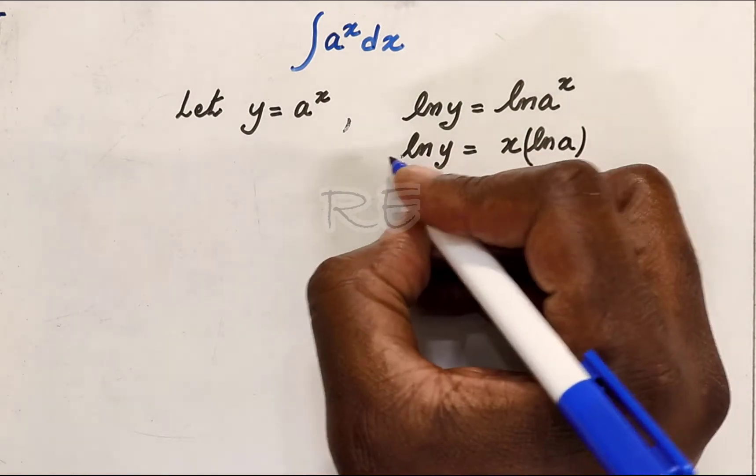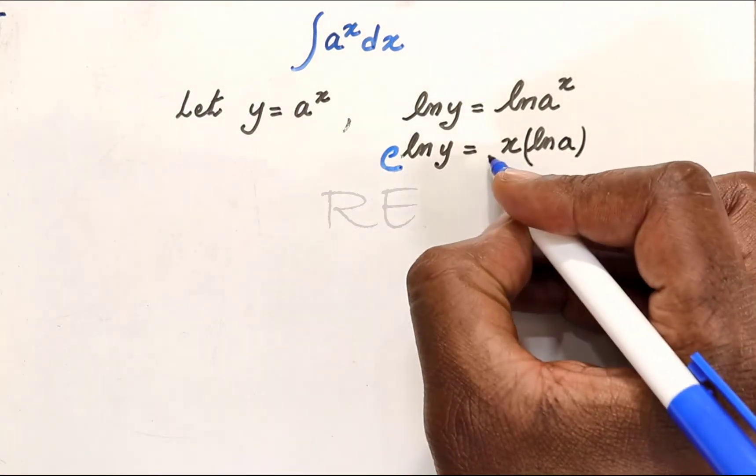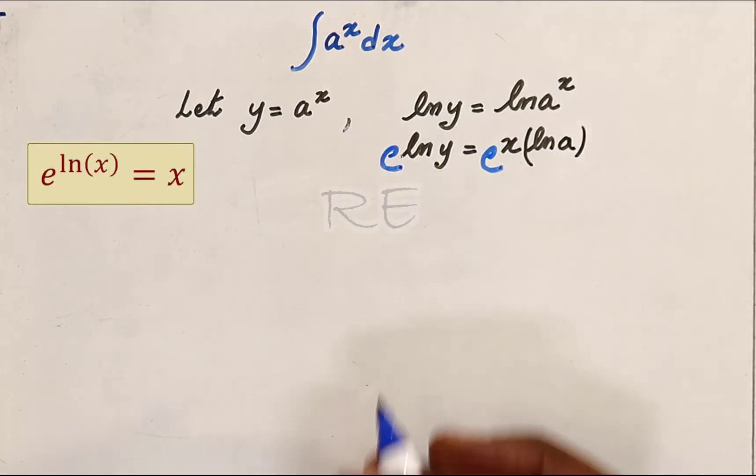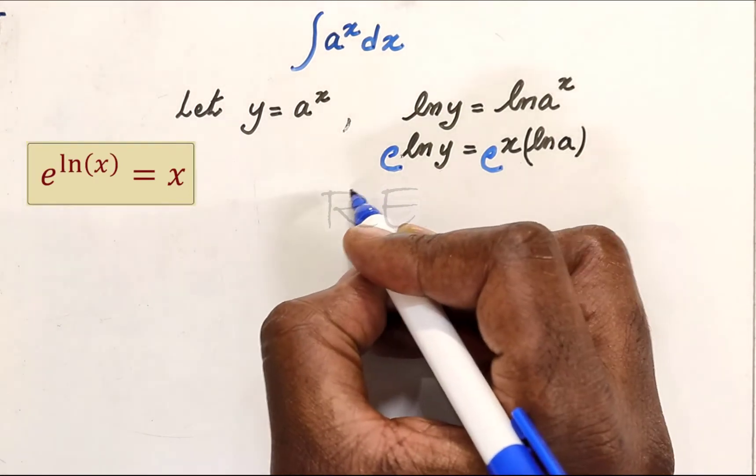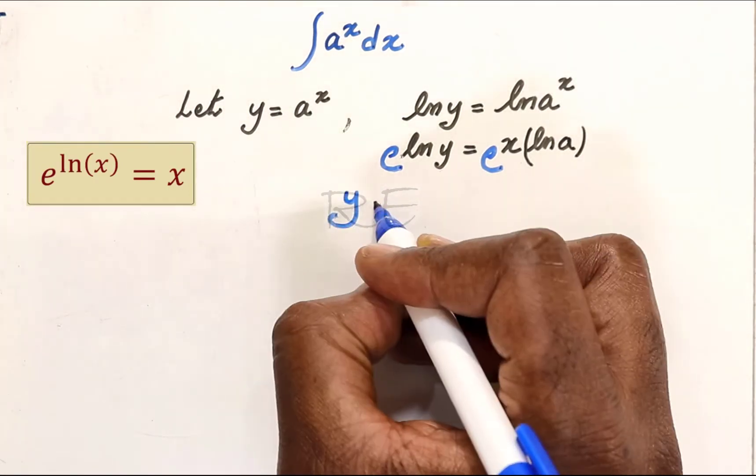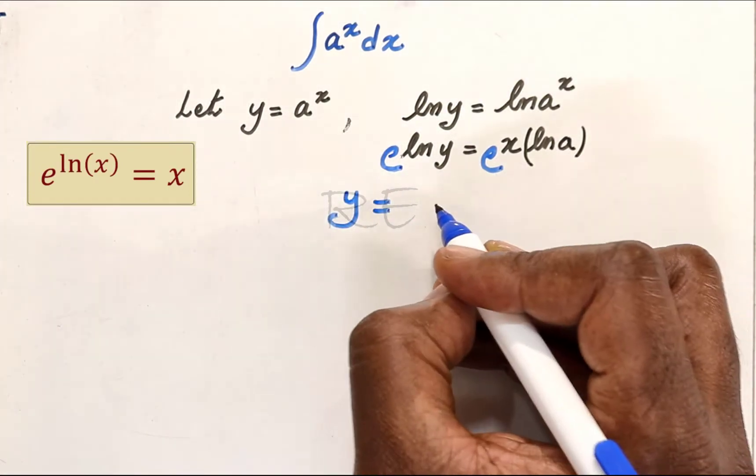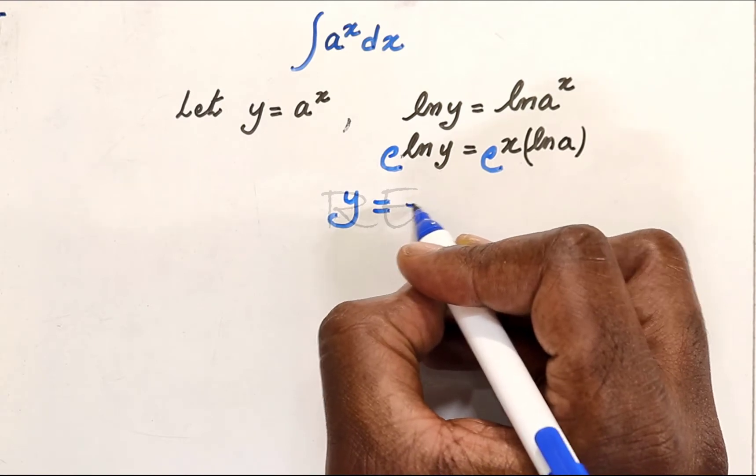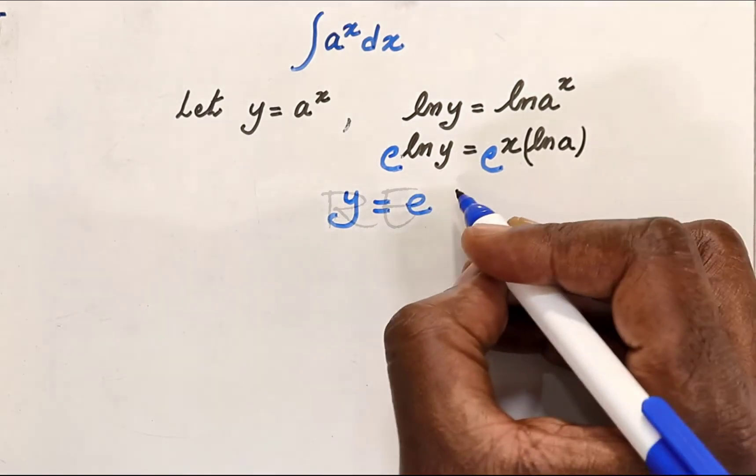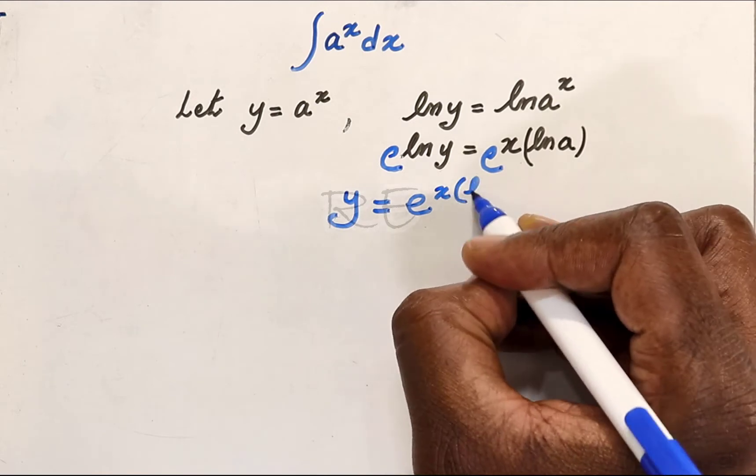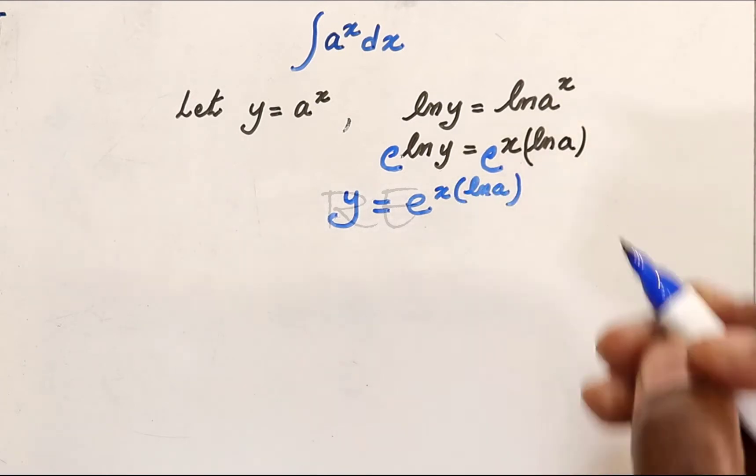We are going to use a trick to get the form that we need. We are going to take the exponential of both sides. And e to the ln y is equal to y, inverse function. And y is equal to e to the x times ln a.